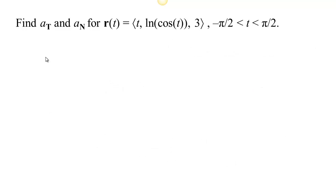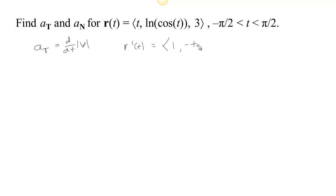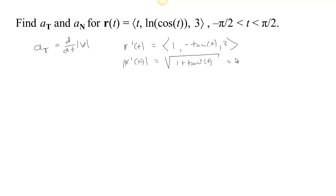Here's another example. Remember, a_T, the component of acceleration in the tangent direction, is the change in speed — how much are you speeding up or slowing down on the curve? In this case, the velocity is 1, minus tan t, and 3, since the derivative of ln(cos t) is minus sin t over cos t, which is minus tan t. The speed is the magnitude of the velocity, which is the square root of 1 plus tan² t, which we know equals the secant of t.